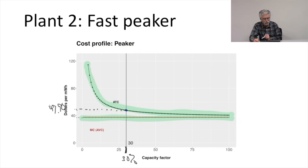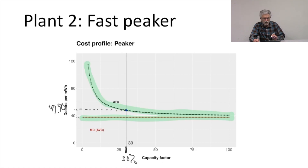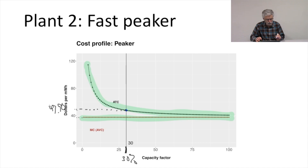Let's take a look at the graph for Fast Peeker. Here we have our average total cost curve and our variable cost curve, which is again the same as our marginal cost. We are anticipating running this plant 30% of the time, so it's only going to run at the highest demand periods of the year. At 30% capacity, its average total cost is $47.90.